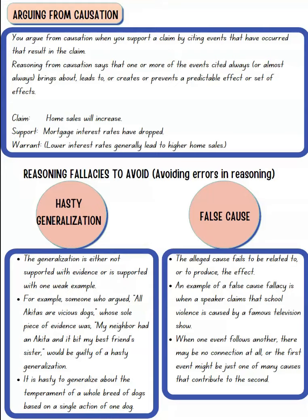When making reasoning, you may encounter errors called fallacies that you need to avoid. The first is hasty generalization. For example, a specific breed of dog — Akitas — attacked your friend. You then generalize that all Akitas are vicious dogs. That is a hasty generalization because one dog attacking your friend does not mean the entire breed is vicious.